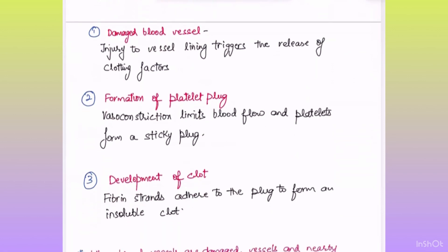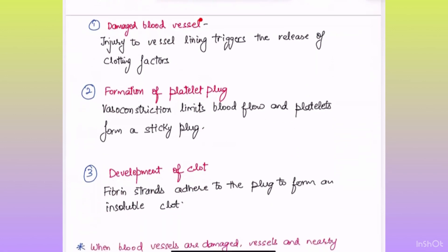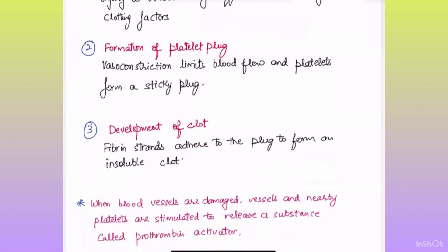The first step is damaged blood vessel. Whenever there is an injury to vessel lining, it triggers the release of clotting factors. The second step, formation of platelet plug, takes place.